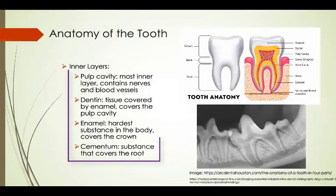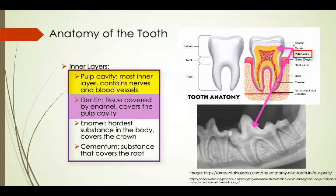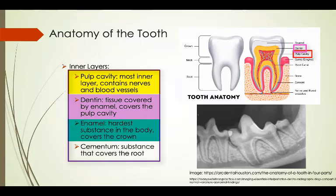The inner layers of the tooth consist of hardened substances as well as nervous and vascular structures. The pulp cavity is the innermost layer of the tooth and it supplies nerves for sensing touch, heat, and cold, and blood vessels that supply the tooth. The next layer is dentin, which is a tissue that covers the pulp cavity. Enamel is the layer that covers the crown of the tooth and it is the hardest substance in the body.